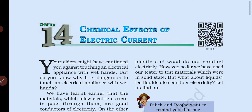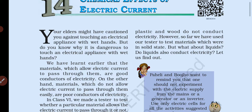Good morning dear students of Standard 8 of Godmother English School. Today we start Science subject Chapter 14: Chemical Effect of Electric Current. Your elders might have warned you against touching an electrical appliance with wet hands. Do you know why it is dangerous? Materials which allow electric current to pass through them are good conductors of electricity, while materials which do not allow electric current to pass through them easily are poor conductors of electricity.